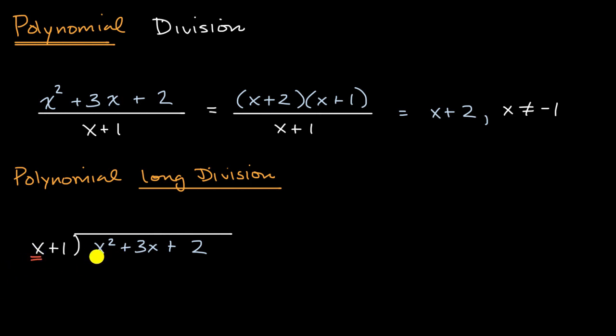You look at the highest degree terms. You say, okay, I have a first degree term and a second degree term here. How many times does x go into x squared? Well, it goes x times. So you put the x in the first degree column, and then you multiply your x times x plus one. x times x is x squared, x times one is x.